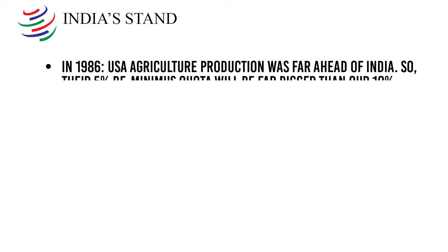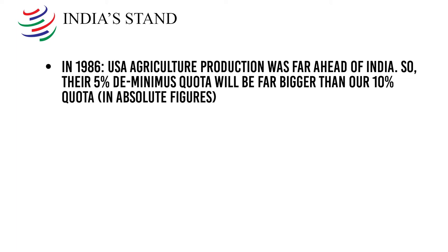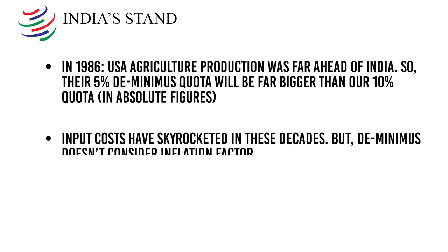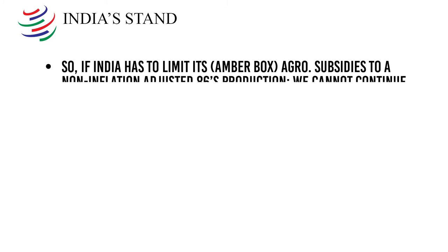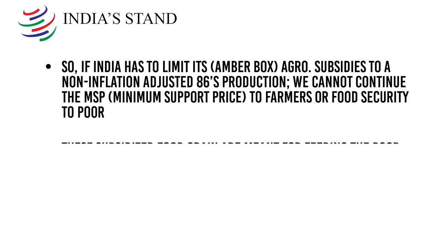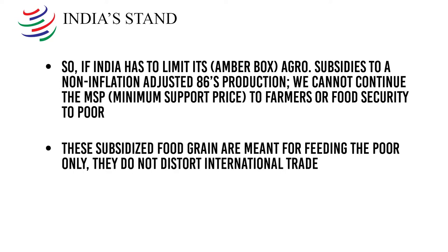So what does India stand on this? In 1986, USA's agricultural production was far ahead of India's, so their 5% de minimis quota will be far bigger than our 10% quota. Input costs have skyrocketed in these decades, but de minimis doesn't consider the inflation factor. So if India has to limit its amber box agro subsidies to a non-inflation-adjusted 1986 production baseline, we cannot continue the minimum support price to farmers or food security programs for the poor. These subsidized food grains are meant for feeding the poor only and do not distort international trade. So India is not going to favor the amber box de minimis limits.